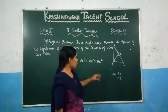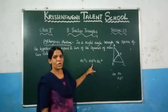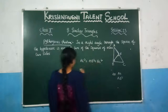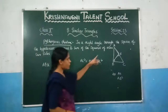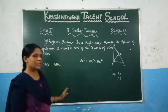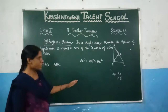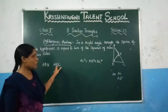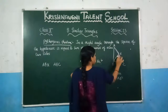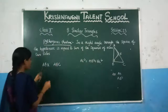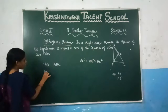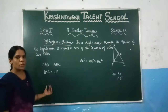Let us prove triangles ABX and ABC are similar. In the smaller triangle ABX, the right angle is at X, so angle AXB equals 90 degrees. In the bigger triangle ABC, angle B is 90 degrees. So angle AXB equals angle B, because both are equal to 90 degrees.